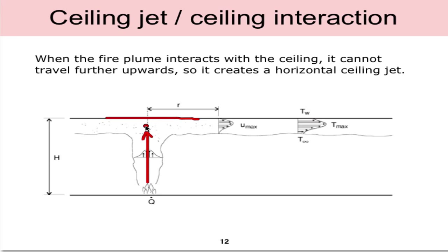What happens if we introduce a ceiling as in an enclosure? The hot gas is traveling upward due to buoyancy, can no longer travel upwards, so it creates this horizontal ceiling jet that travels in all directions. We have a velocity profile, a temperature profile, all in the ceiling jet and outside of this area is assumed to be ambient conditions.